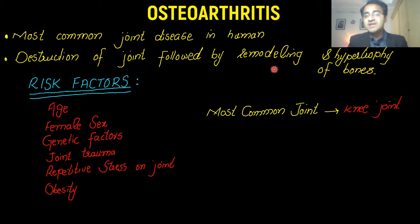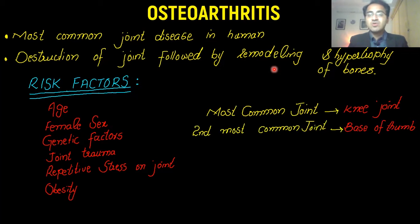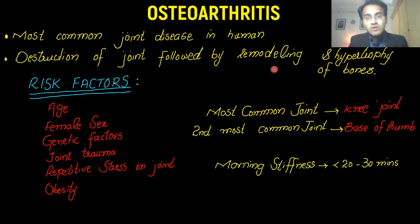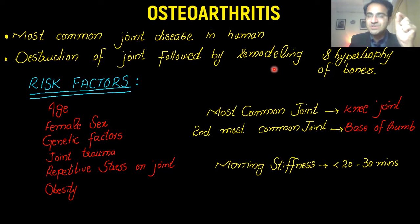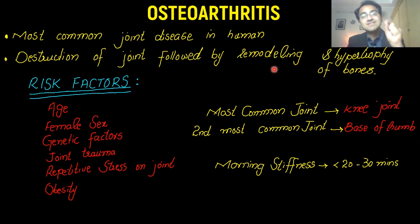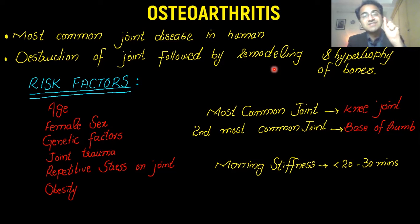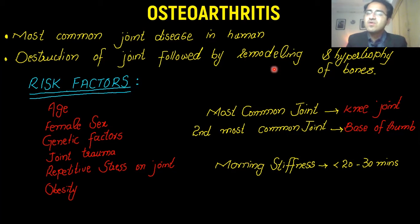It most commonly involves the knee joint. The second most common joint is the base of the thumb. It also causes morning stiffness, but this morning stiffness is less than 20 to 30 minutes. This is important because it is the differentiating factor from rheumatoid arthritis, where morning stiffness is greater than one hour and may last for hours.